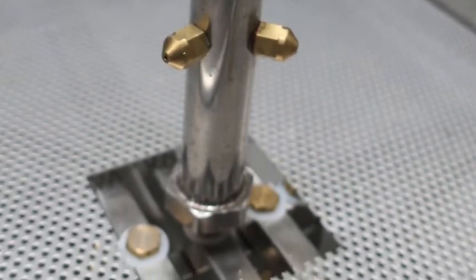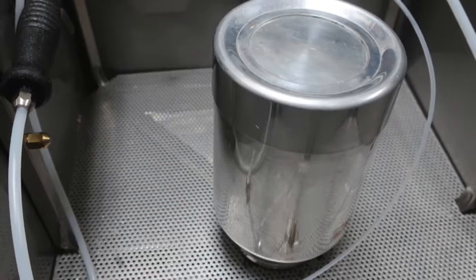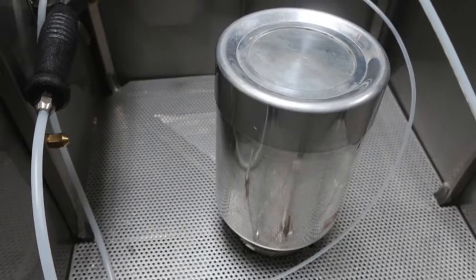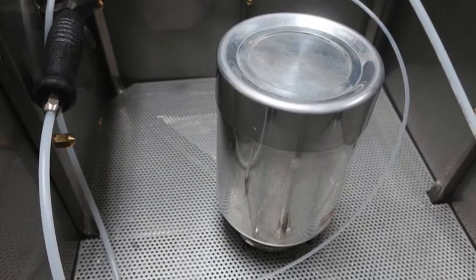Each UPP6500D is specially built for the customer using the dimensions of the pressure pots they use to ensure the jet stand has clearance to rotate and clean efficiently.